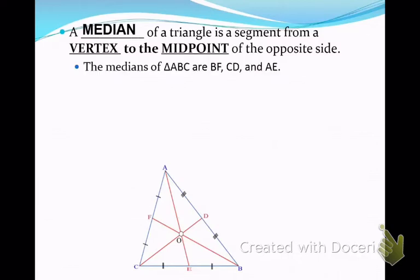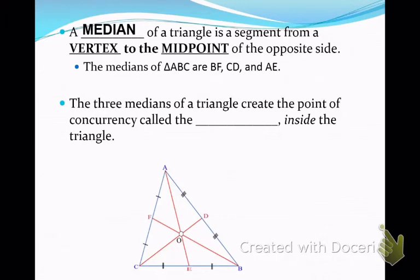In this particular triangle, triangle ABC, BF, CD, and AE are all medians, stretching from a vertex to the midpoint of the opposite side. As you see here in the diagram, the medians are going to all meet at a common point. They are going to be concurrent. That point of concurrency where they meet is called the centroid.